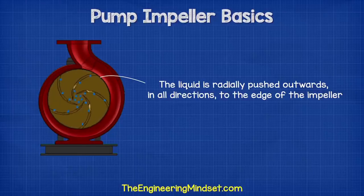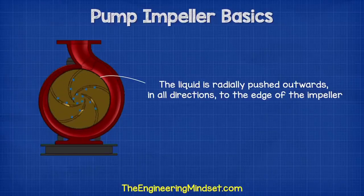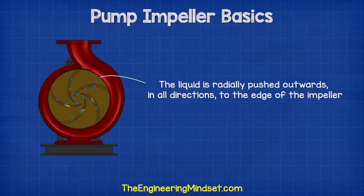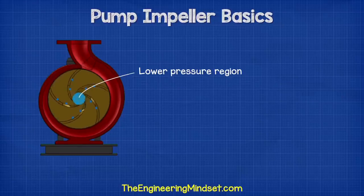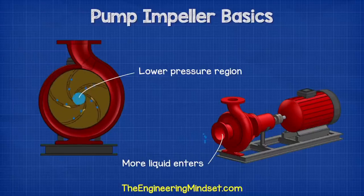The impeller is submerged in water. When the impeller rotates, the water within the impeller also rotates. As the water rotates, the liquid is radially pushed out in all directions to the edge of the impeller and into the volute. As the water moves outwards off the impeller, it creates a region of low pressure which pulls more water in through the suction inlet.